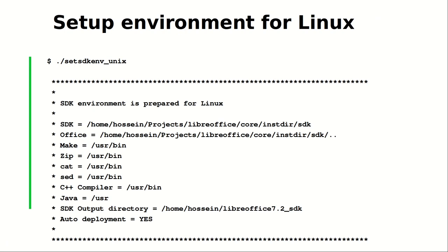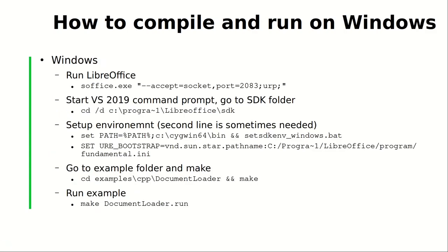This is the result of the setsdkenv_unix script, which is usable in Linux and Unix. As you can see, the SDK folder, the Office folder, the path to several utilities, and also the C++ compiler and Java are set here. The output directory is inside your home directory. I don't use Java here, so it's not used in this case.